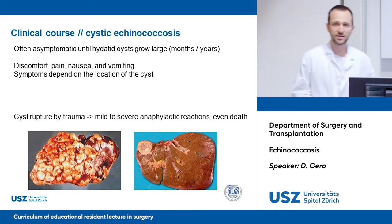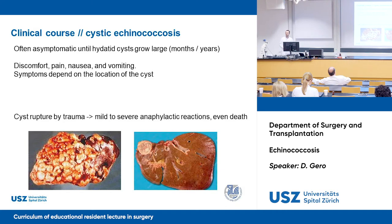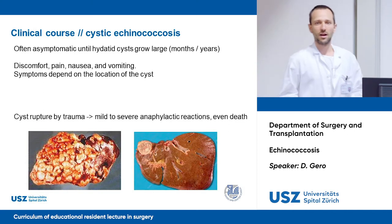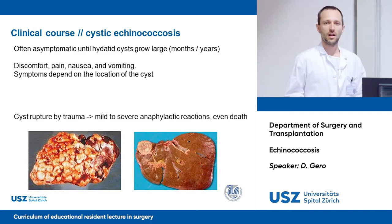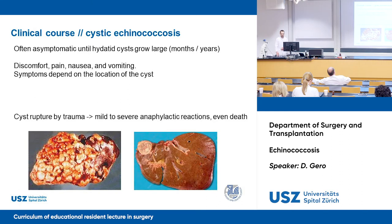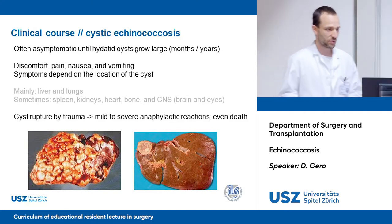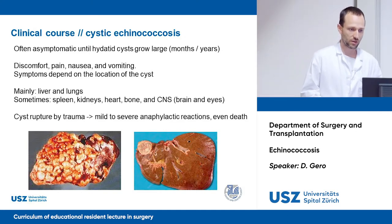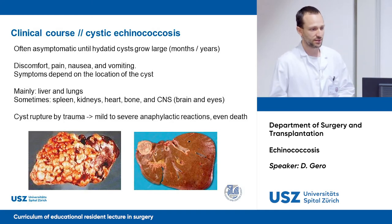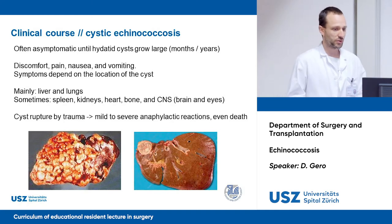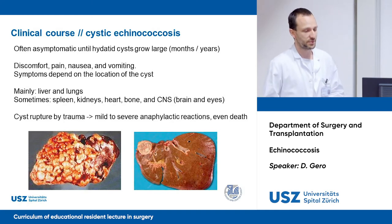My first question to the resident: which organs are most frequently affected by cystic echinococcosis? Mainly the liver, then the lungs, and sometimes other organs like the kidney or spleen. That's correct — the main affected organs are the liver and lungs, and sometimes the spleen, kidneys, heart, bone, and even the central nervous system.